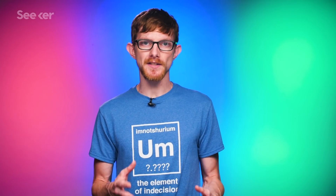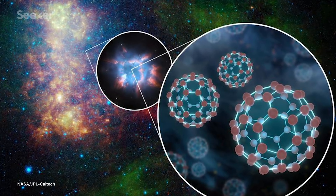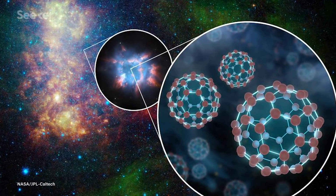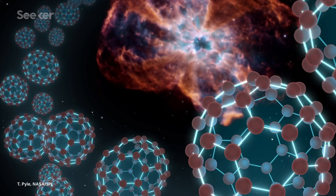Confirming C60+ has some interesting implications. First, it shows just how complex molecules in space can get. Before C60 was spotted, the next most complex compound was made up of just 12 atoms. The ionized form of C60 shows that these large molecules can form even in harsh ultraviolet irradiated environments.